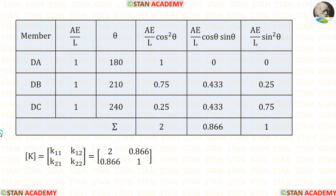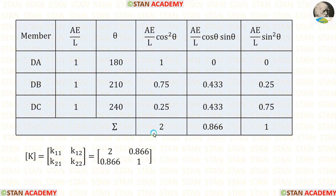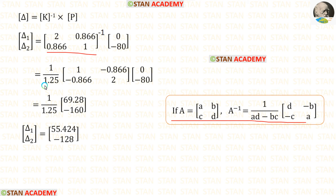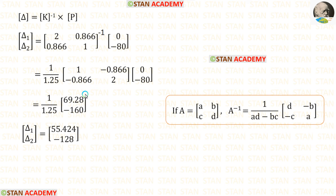Now we can make the table. For all members AE/L equals 1. Applying the calculated theta values, we compute cos²θ, cosθ·sinθ, and sin²θ for each member, then form the stiffness matrix. Using the inverse formula we find the inverse of the K matrix. Then multiplying K inverse by P matrix and dividing by the appropriate value, we obtain delta 1 and delta 2.